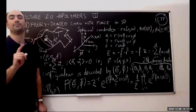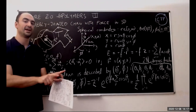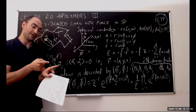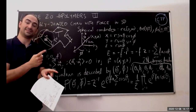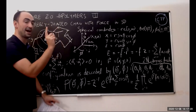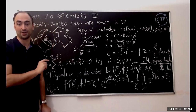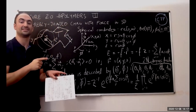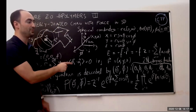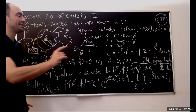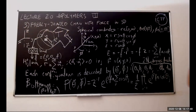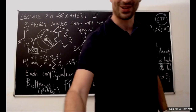This exponential of a sum can be written as a product from j equals one to n of e to the beta f a cosine theta_j. The nice thing here is there is no constraint on the angles — each angle is independent from the others. This is a big simplification, because I'm not including bending energy.